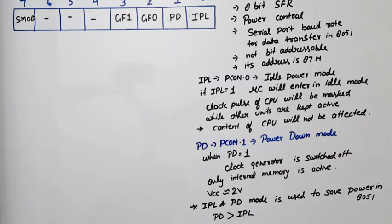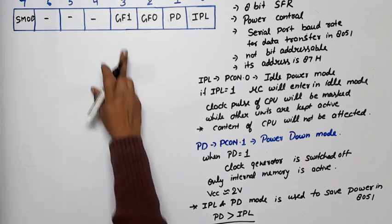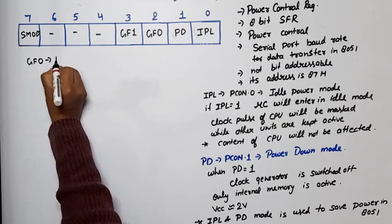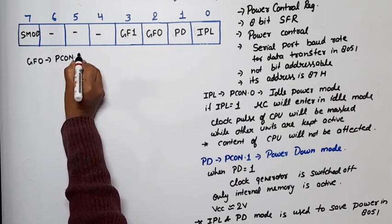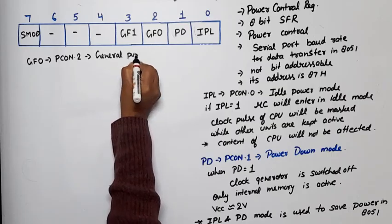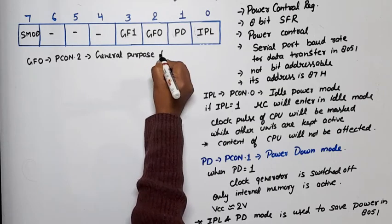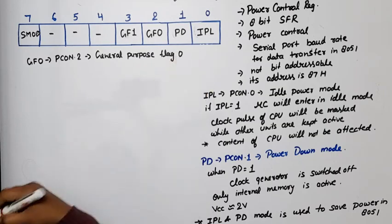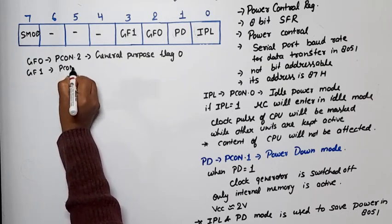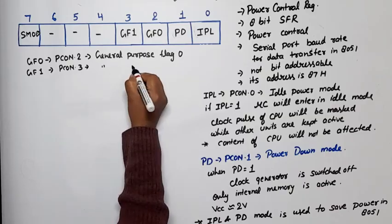Now let's discuss remaining bits. GF1 and GF0. GF0 or PCON dot 2 is general purpose flag 0, which we generally take as 0. And GF1 is PCON dot 3, this is also general purpose flag 1.